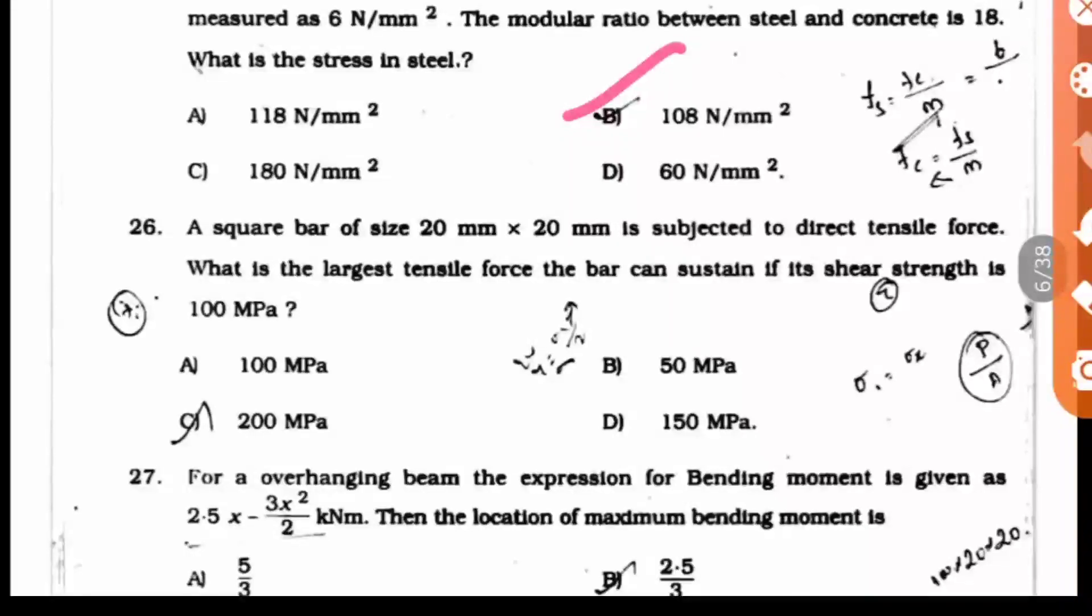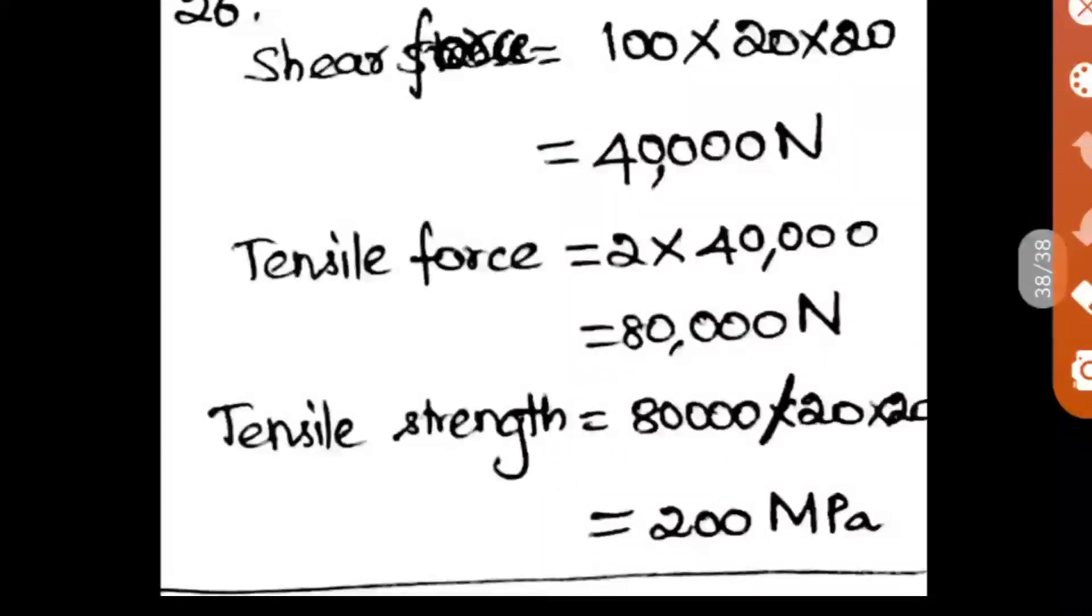Question 26: A square bar of size 20mm by 20mm is subjected to a direct tensile force. What is the largest tensile force the bar can sustain if its shear strength is 100 MPa? They have given the area and the shear strength alone. Now we have to find the tensile force. Shear force is 100 times 20 times 20, the shear strength times area, so we're getting 40,000 N.